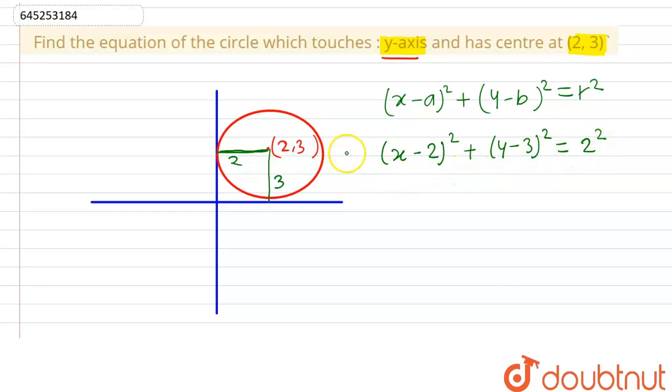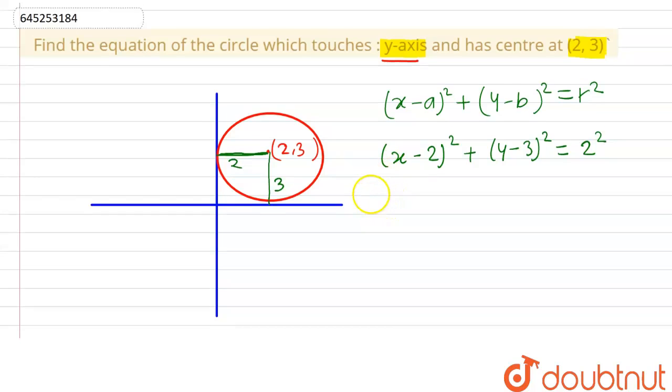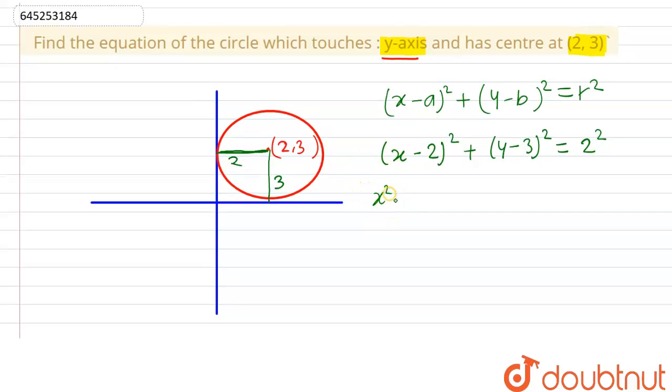So now when we expand this, this is x² - 4x + 4, plus y² - 6y + 9 equals to 4. So we can cancel this 4 and this 4.